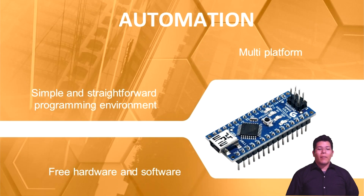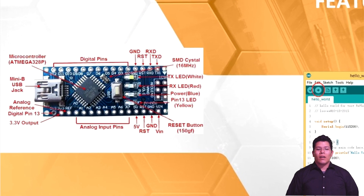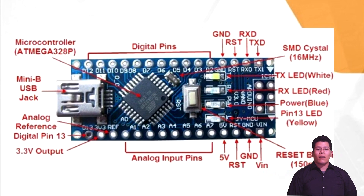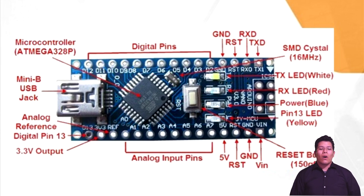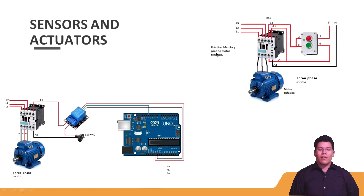Now it is time to talk about the automation of our project. We will start with the central controller — I am talking about the Arduino. It is a great element for automation and development projects. We will use the Arduino Nano, which is one of the most compact boards of its family. The Arduino will have the utility of controlling the motor, but not directly.